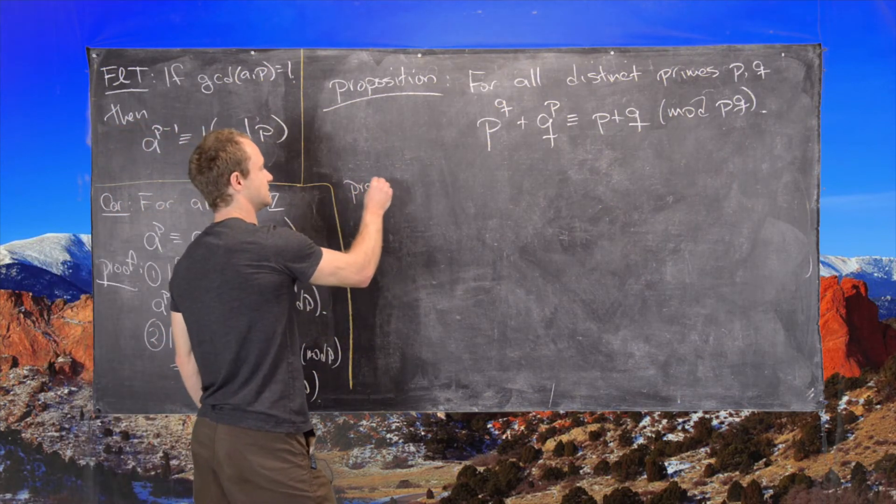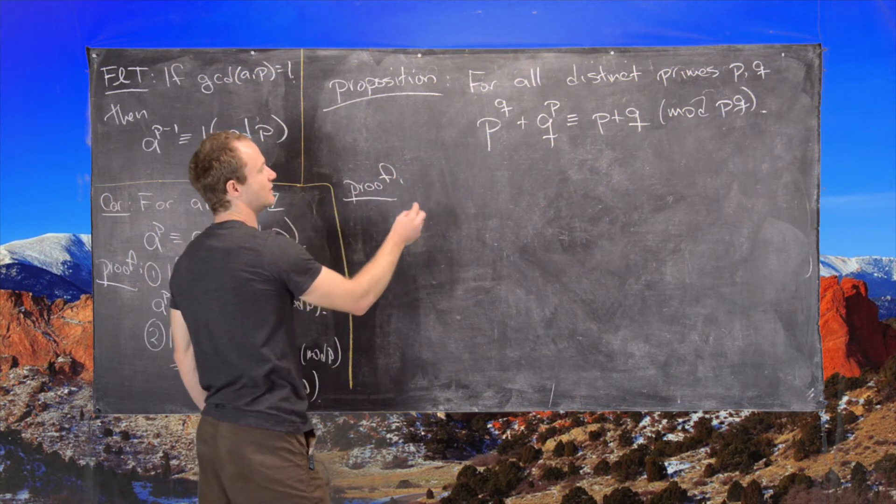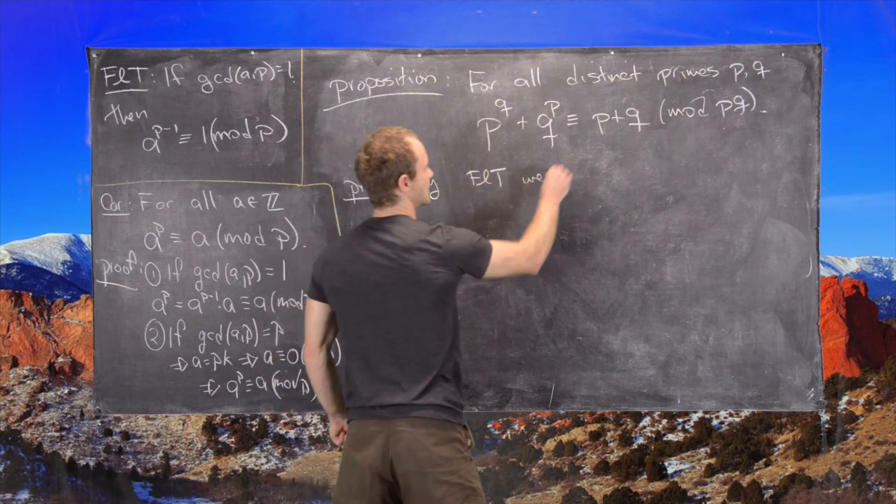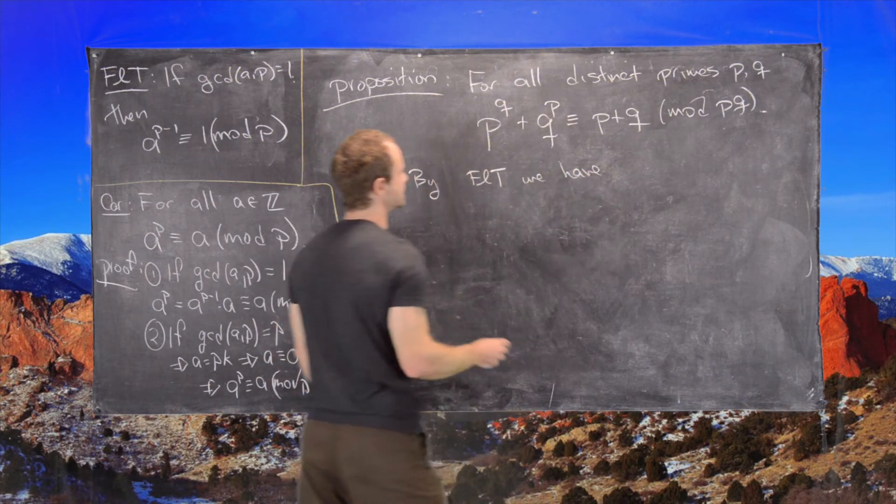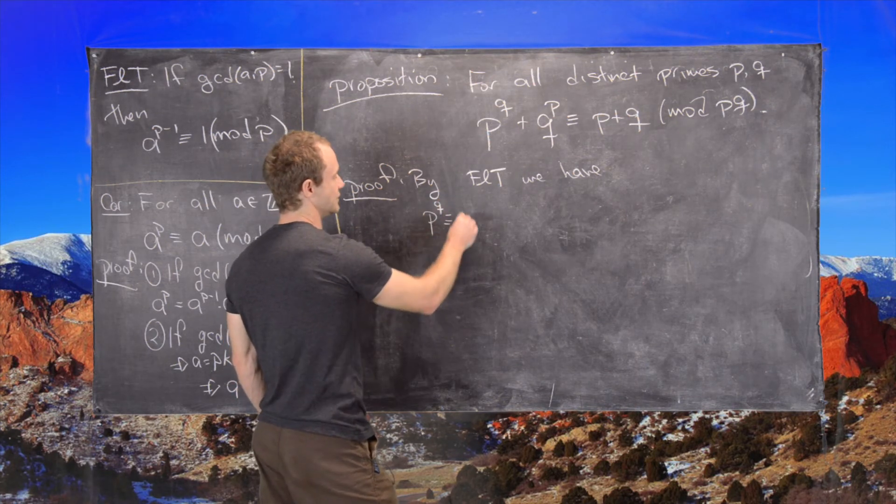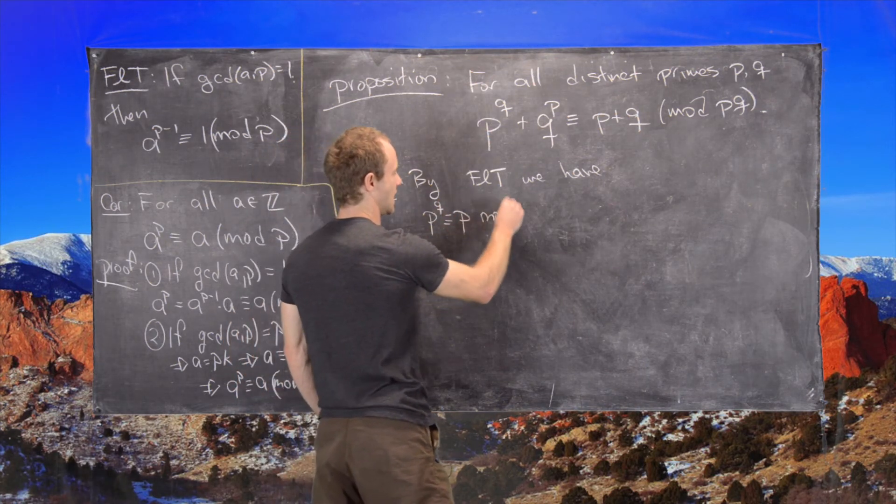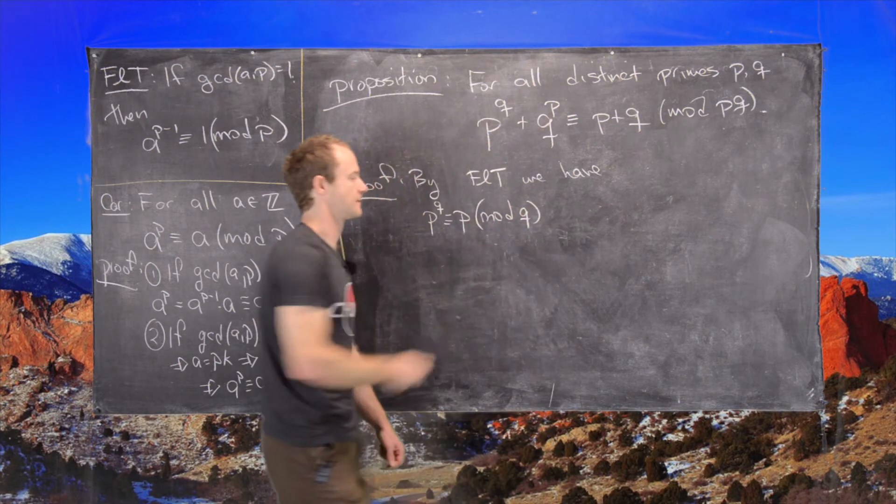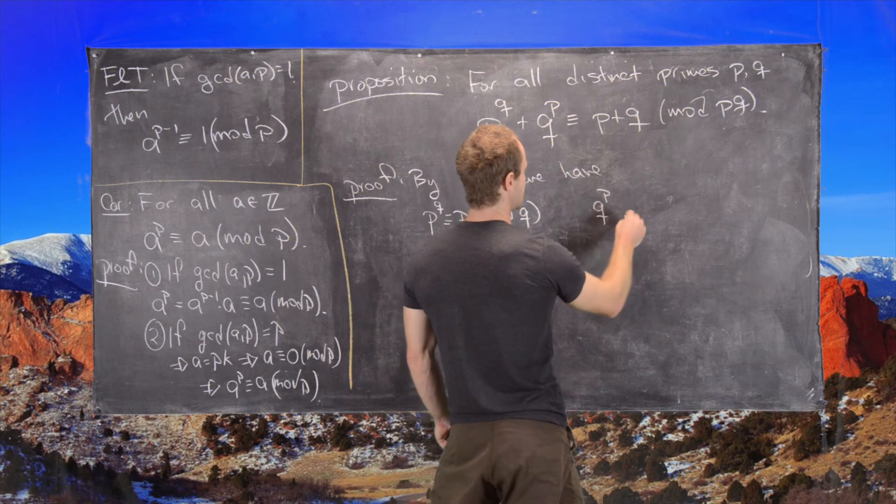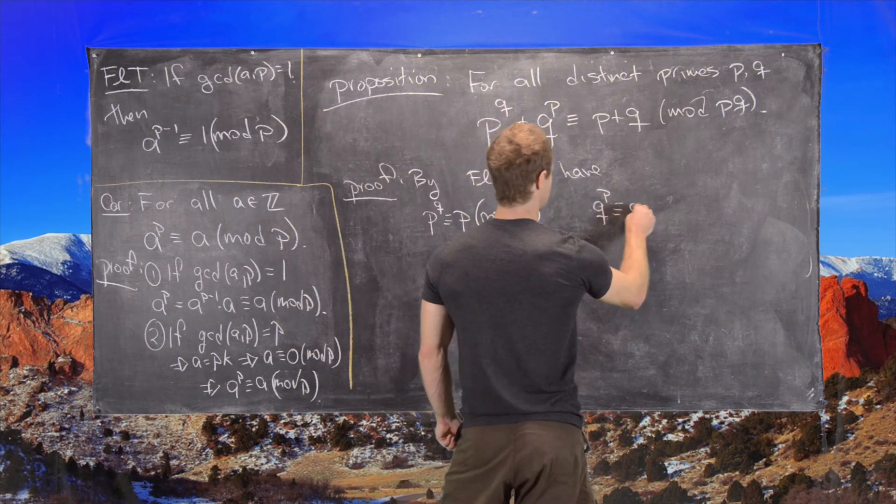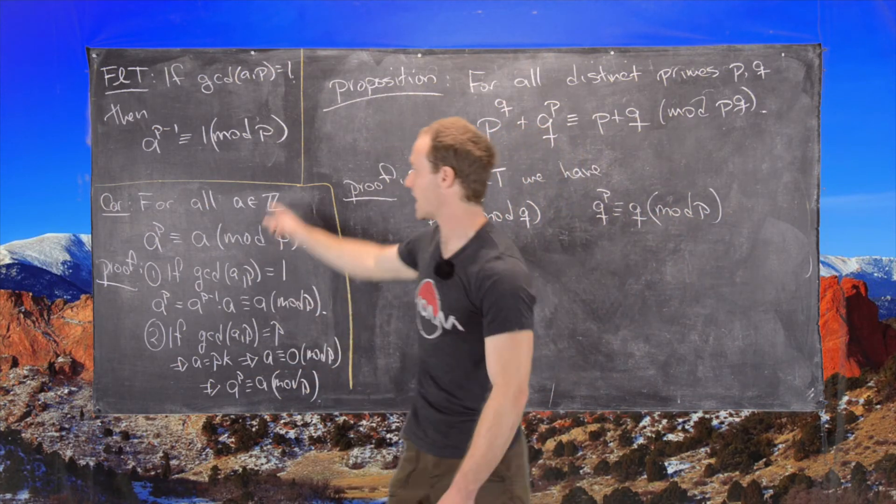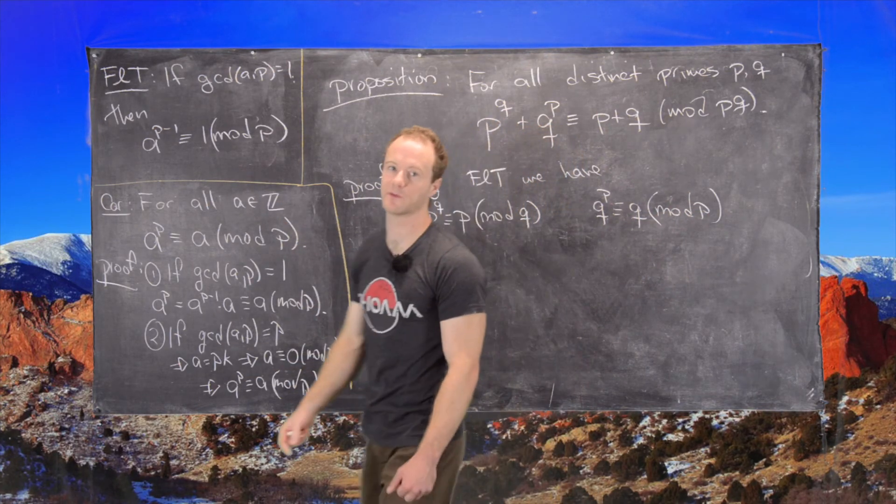So the proof goes like this. So notice that by Fermat's Little Theorem, we have the following two statements. We have P to the Q is congruent to P mod Q. And we have Q to the P is congruent to Q mod P. And I should say by this corollary to Fermat's Little Theorem that we proved earlier.